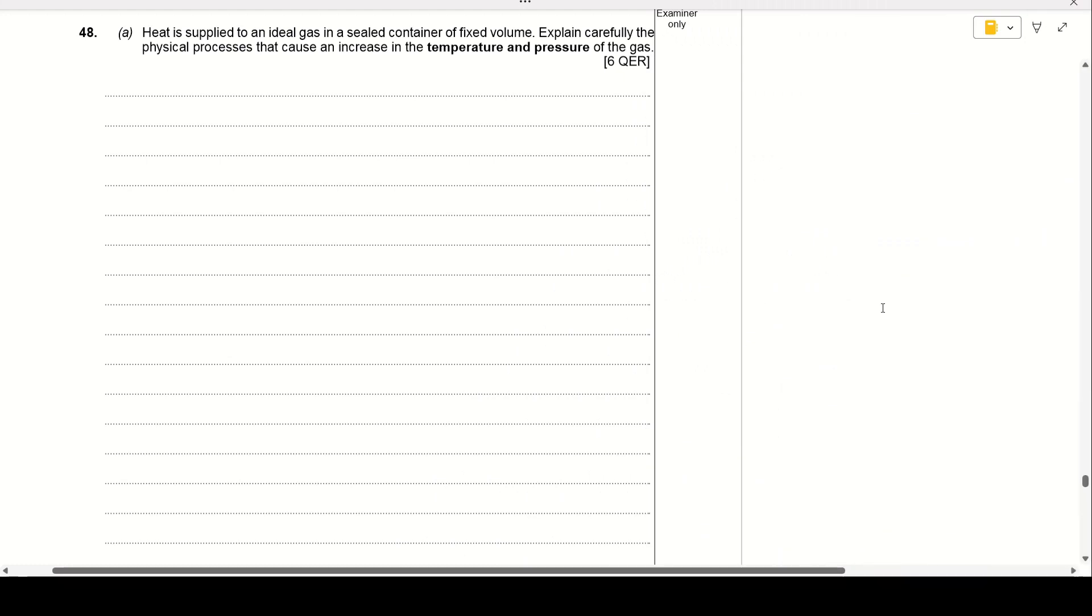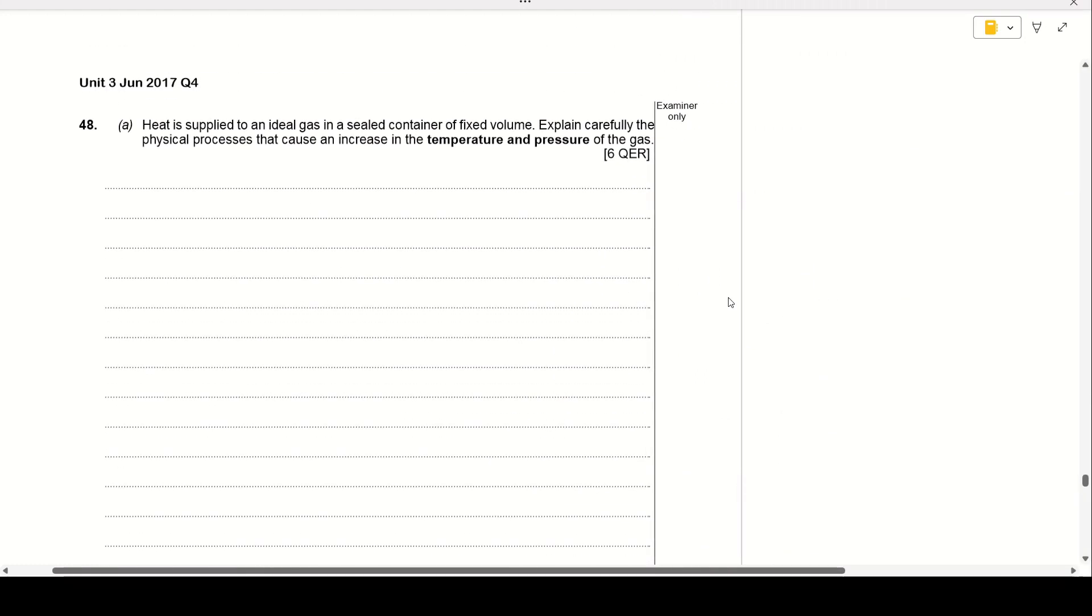Hello and welcome to another WJEC A-level physics question. This one was requested by somebody on YouTube and they wanted to go through the Unit 3 2017 paper question 4. Now the first part of the question says, heat is applied to an ideal gas in a sealed container of fixed volume. Explain carefully the physical processes that cause an increase in the temperature and the pressure of the gas. And this was the 6 mark QER question from that year.